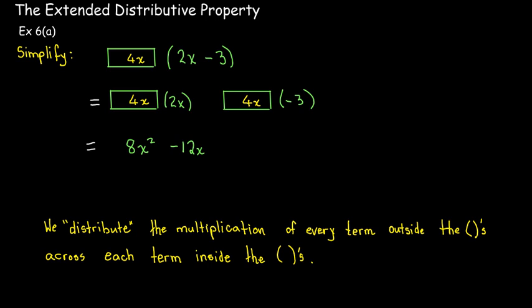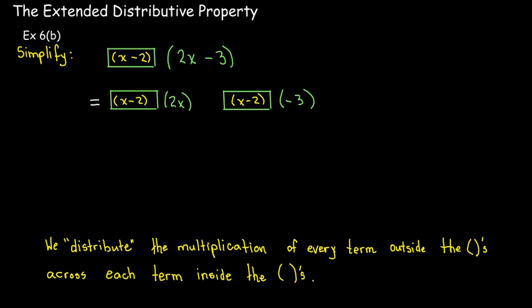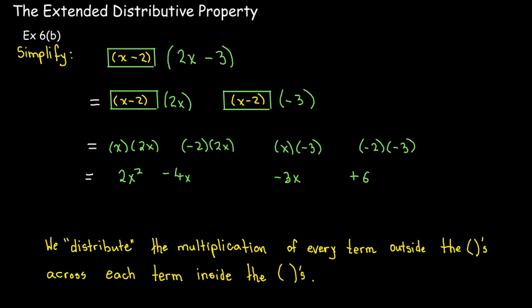But I could also put a group inside the box, like x minus 2. When I distribute, I'd have x minus 2 times 2x, and x minus 2 times negative 3. I perform the multiplication as normal: 2x times x, 2x times negative 2, negative 3 times x, negative 3 times negative 2 — four products. Looking for like terms: x squared is not like the negative 4x, but the two terms with only x combine to make negative 7x.